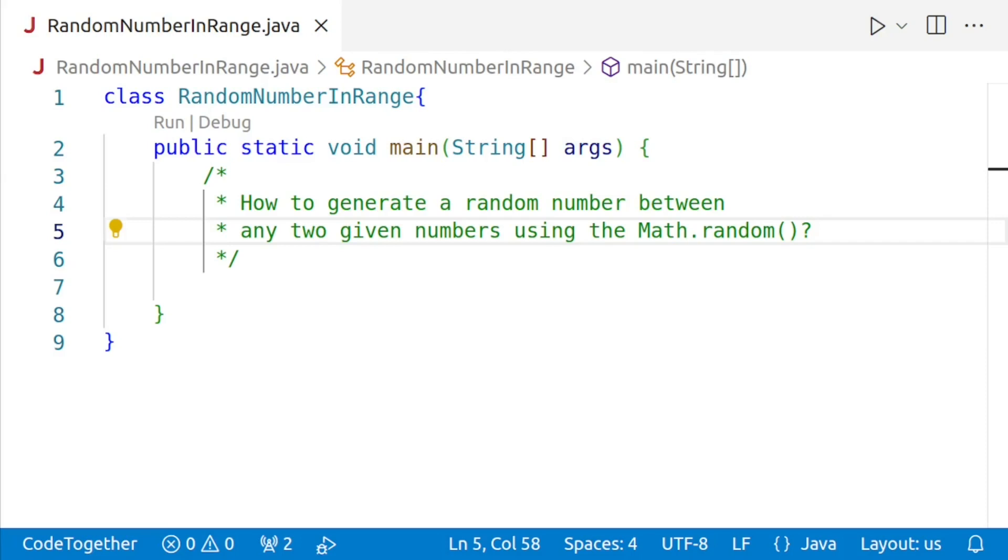Note that there is a method nextInt in the Random class which allows us to achieve the same thing, but we won't be using it since the Random class is neither in the ICSC nor in the ISC syllabus, whereas Math.random is in both the ICSC and the ISC syllabus.